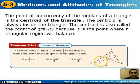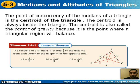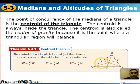Looking at point P, that's the centroid. The distance from A to P is two-thirds the distance from A to Y, and this would be one-third the overall length.